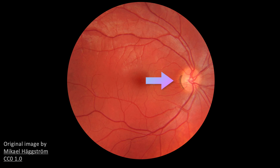Here we will focus on the optic disc, which is usually pale orange to pink in color, is round with sharp margins, and has a cup-to-disc ratio of less than 0.5. In this case, there is a small degree of non-pathological pigmentation at the periphery of the disc.